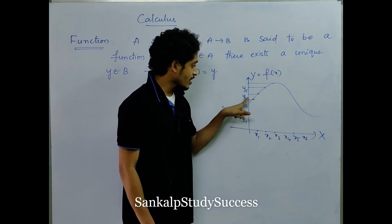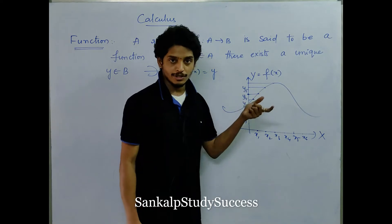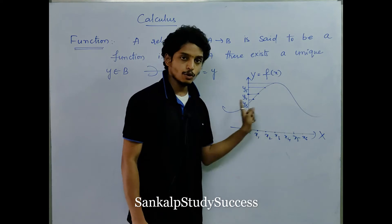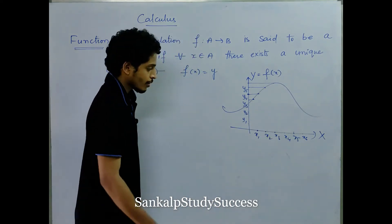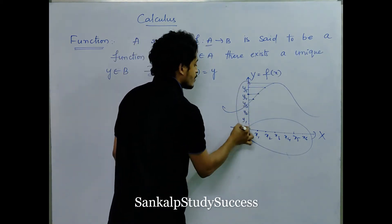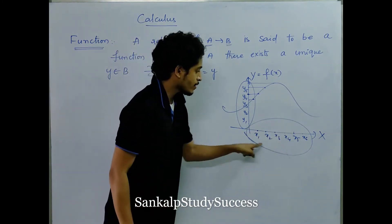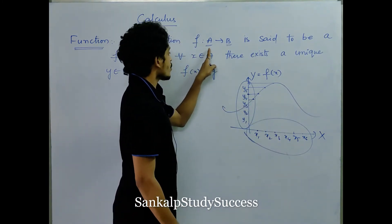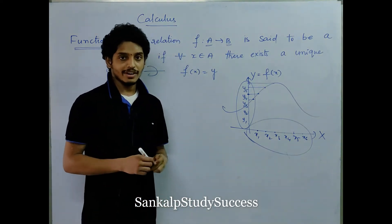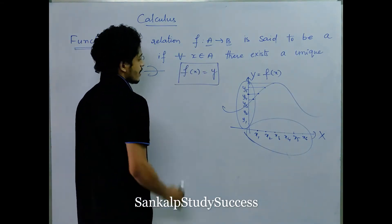If we have x2 input, we have a value output. If we have x3 input, we have y5 output. So if we have a function, there is a relation in this way. From this, we can represent set A here — this is nothing but the domain. The values in set B — since these are B values, we can set A for x values. A is a set, B is a set. We name A as the domain and B as the co-domain. So a simple function f of x equals y.